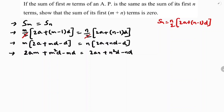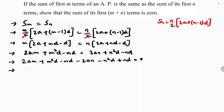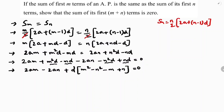Taking all the terms towards the LHS: 2Am plus m squared D minus mD minus 2An minus n squared D plus nD equals zero. Now writing like terms together, taking D common in all the D terms, we get the square terms: m squared minus n squared, minus m plus n, equals zero.